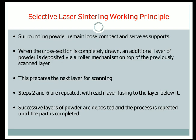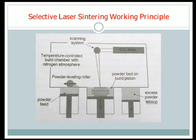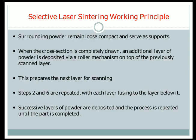When the cross-section is completely drawn, an additional layer of powder is deposited via a roller mechanism on top of the previously scanned layer. This prepares the next layer for scanning. Steps are then repeated, with each layer fusing to the layer below it.